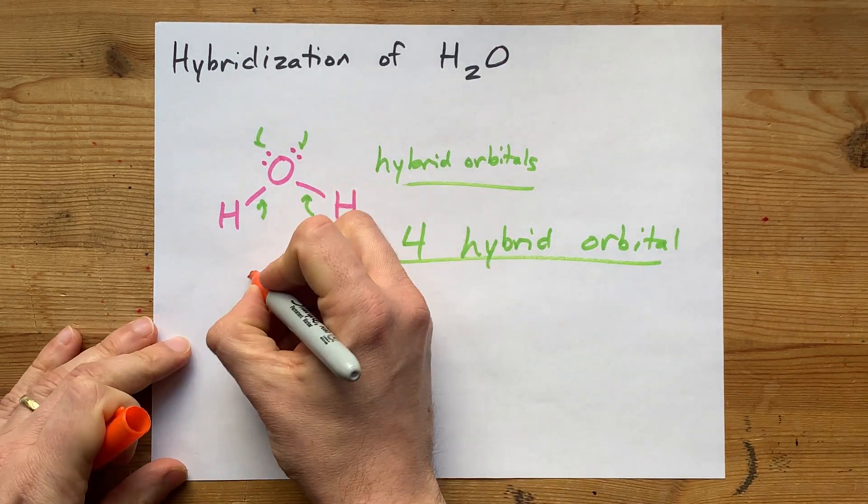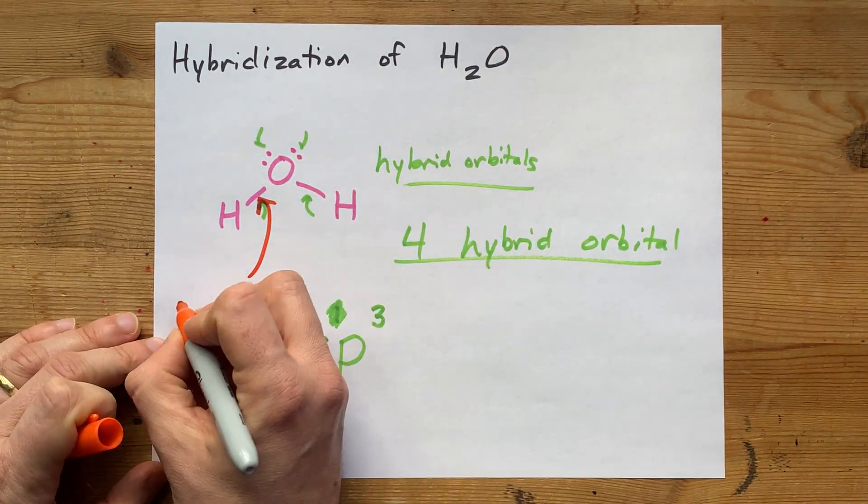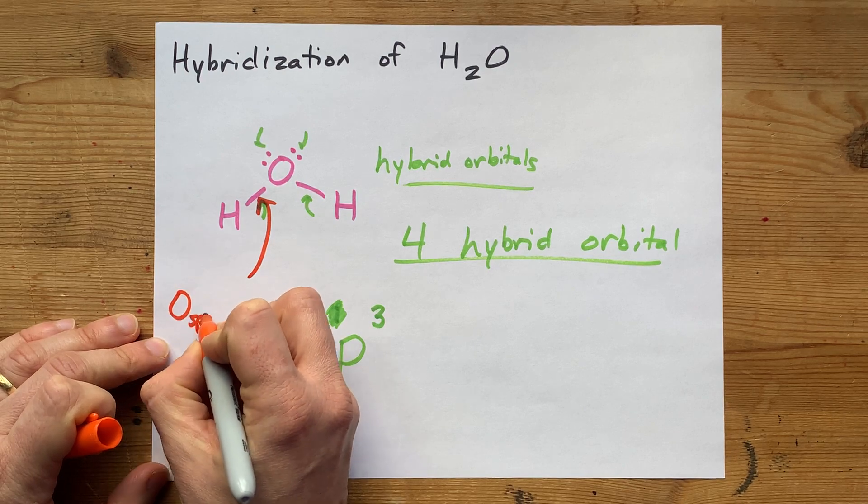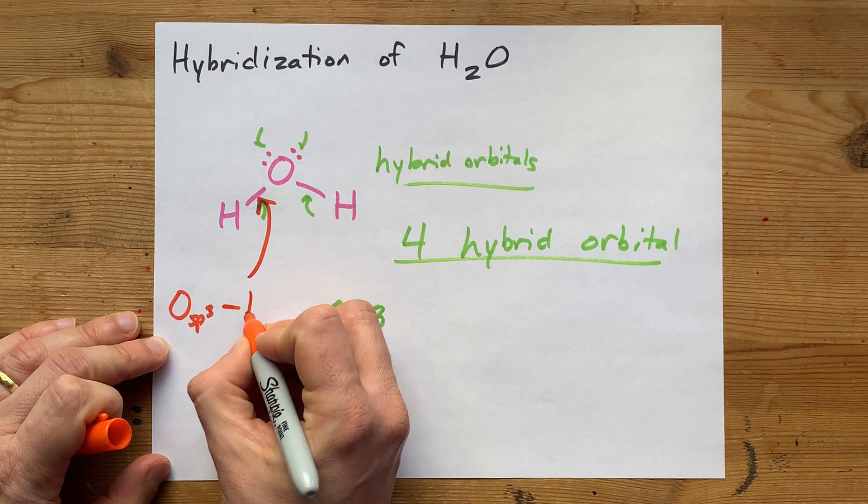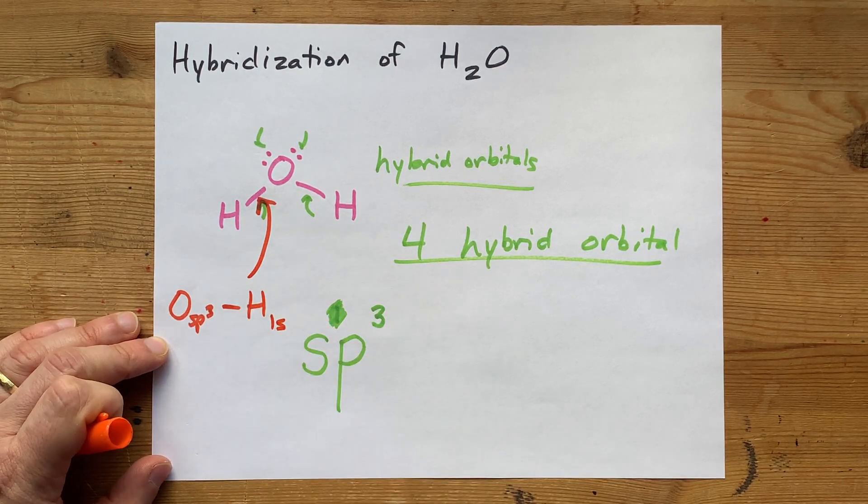So this sigma bond is an sp3 hybridized orbital from oxygen, sigma bonding with the 1s orbital of hydrogen.